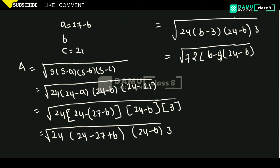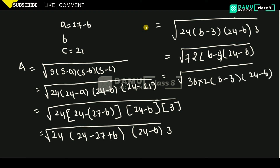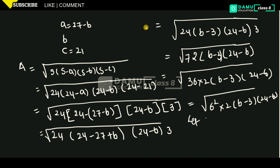We can write 72 as 36 times 2, and 36 as 6 squared. So the expression becomes the square root of 6 squared times 2 times (b minus 3) times (24 minus b). We need to substitute a value for b such that the whole expression becomes a perfect square.